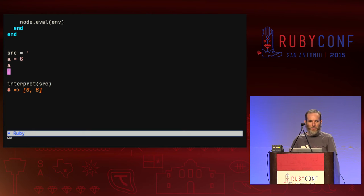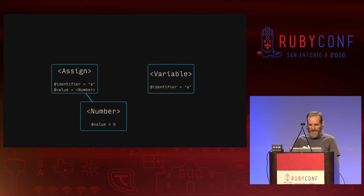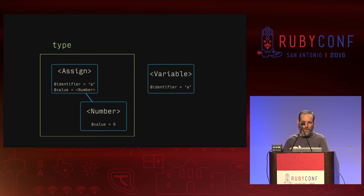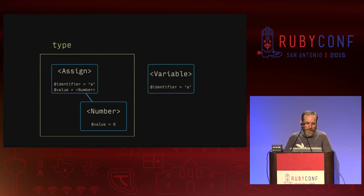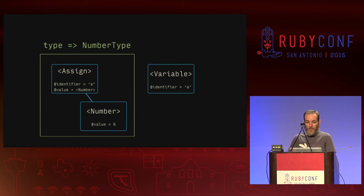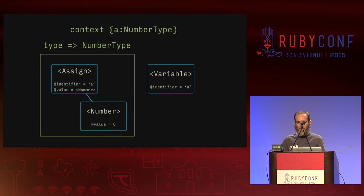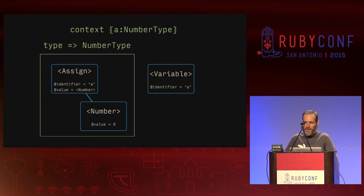We're not here to write an interpreter — we're here to write a type checker. The next step is the type checking algorithm, which works just like eval but is more abstract. Instead of calling eval on our nodes, we call type. When we call type, the assignment goes to its value and asks for its type — in this case, a number. A number is a primitive type, so we just name it: number type. The type of an assignment is also number type. We also update something called a context — like the environment, but storing types rather than values.